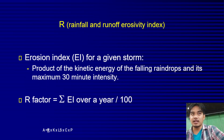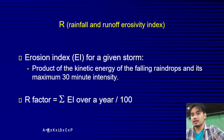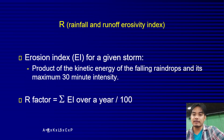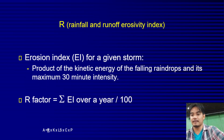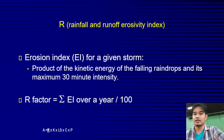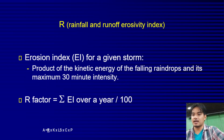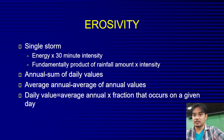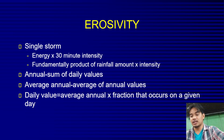We then get the summation of the daily erosion index values, then make it yearly. Your R factor is the summation of EI over a year, divided by 100. So you sum up one year's worth of erosion index values and divide by 100 to get your R factor. For a single storm, it is the kinetic energy times the 30-minute intensity.